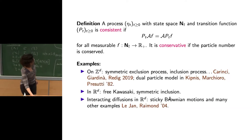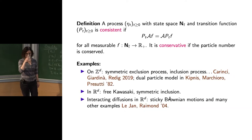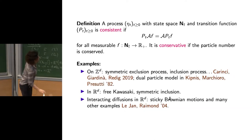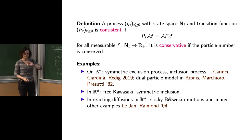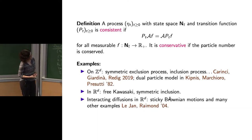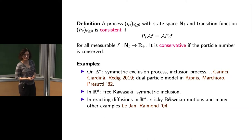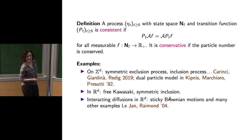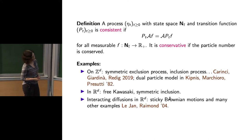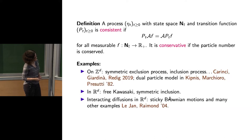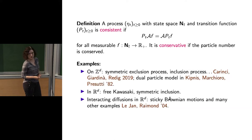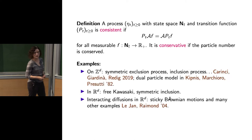A question arose: since jumping depends on which particles are present, removing a particle first changes how the next particle jumps. The answer is that the jumping probabilities are chosen in a very specific way which is precisely why it works out — you couldn't do it for any jumping probability, but it does work out.